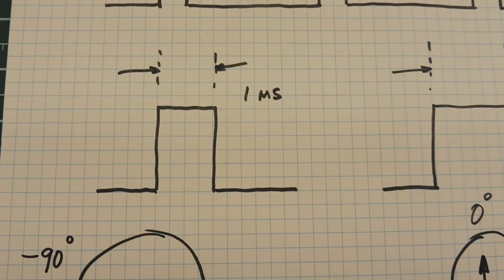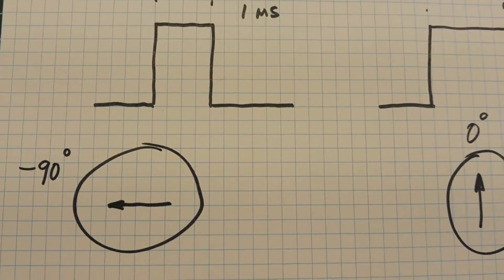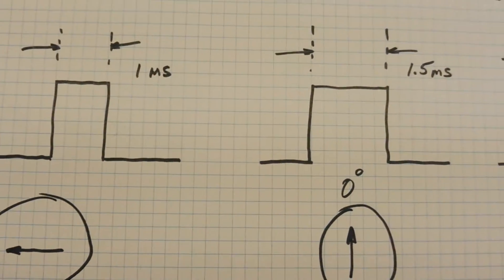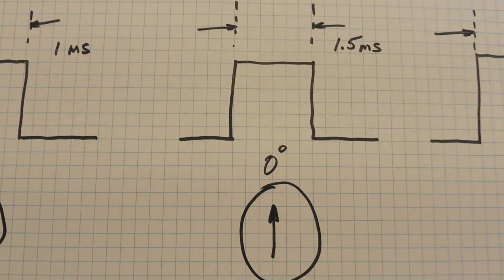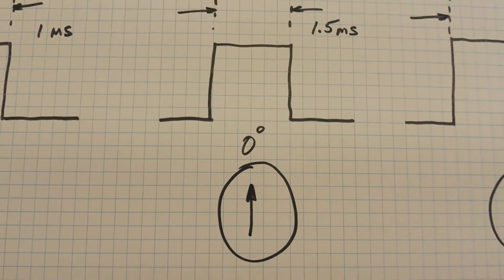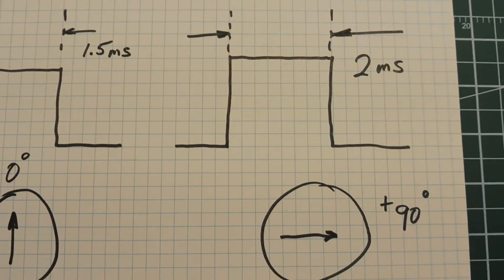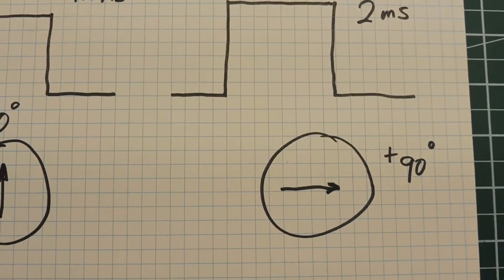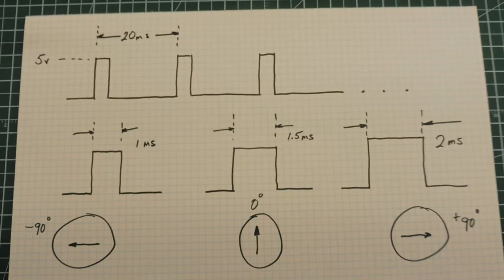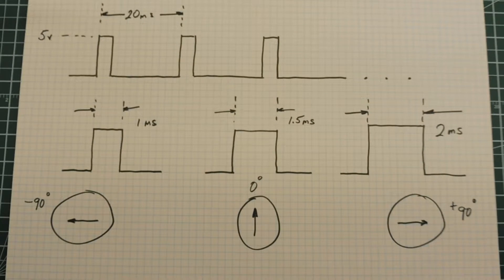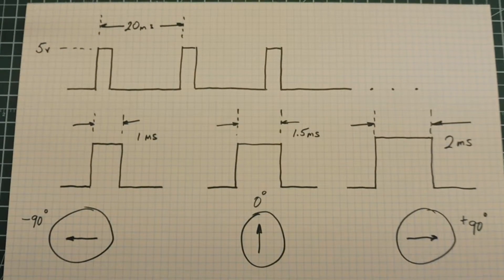So if we send out a pulse width of 1 millisecond, our servo will rotate to its minus 90 degree position. If we send out a pulse of 1.5 milliseconds, the servo will center itself at its zero degree position. And if we send out a pulse of 2 milliseconds, the servo will rotate to its plus 90 degree position. Now these timing values are textbook, and in the real world you'll find different values. In my case, my servo range was from a half a millisecond to over 2 milliseconds.